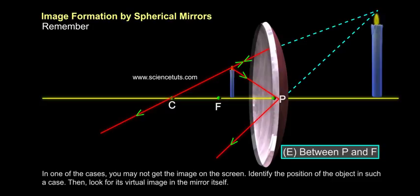In one of the cases, you may not get the image on the screen. Identify the position of the object in such a case, then look for its virtual image in the mirror itself.